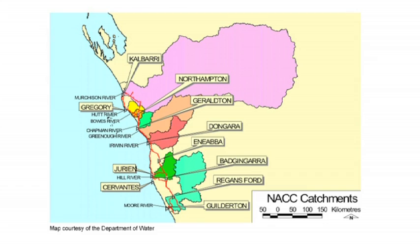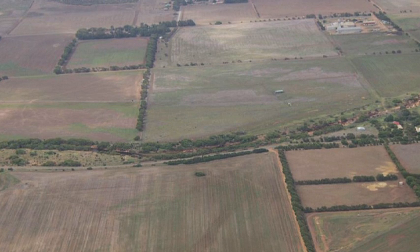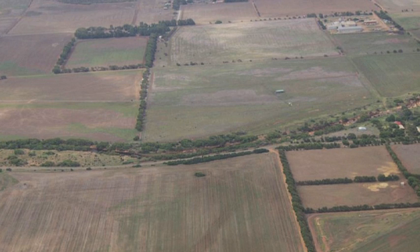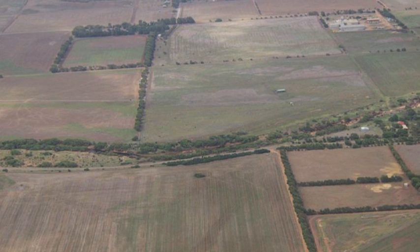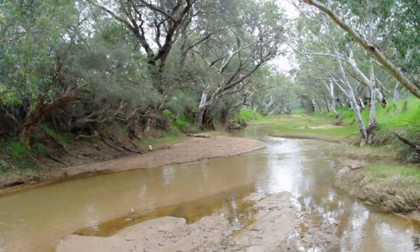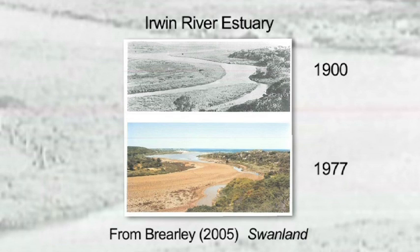This map shows the catchments of the five Northern Agricultural Region estuaries investigated by NACC: the Murchison, the Greenough, the Irwin, the Hill, and Moore River estuary. Land use in the catchment area of an estuary can greatly affect the quality of the water flowing to that estuary. When land within the catchment is cleared, surface water runoff from rainfall is increased, as there is no vegetation and leaf litter to slow the water down. This increased runoff takes with it soil particles that settle in the estuary, making it more shallow and increasing turbidity. This process is known as sedimentation.